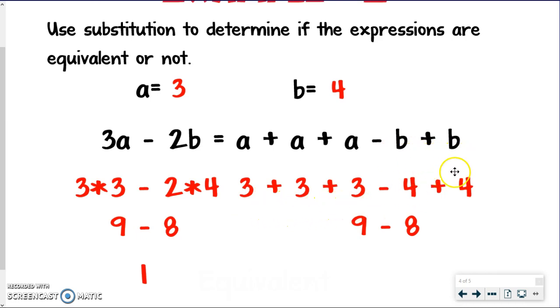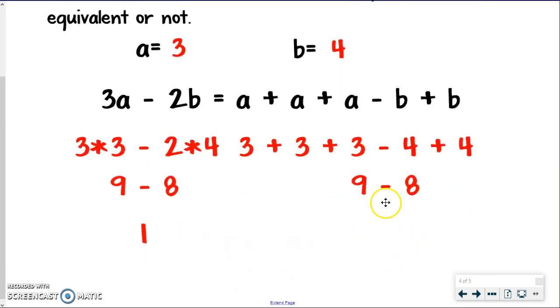And the same thing with B's, combining the B's together and then worrying about this subtraction. So 9 minus 8 to get 1. So these again are equivalent. I got the same answer when I substituted. Again, if you want to try different numbers, that's up to you. One more.